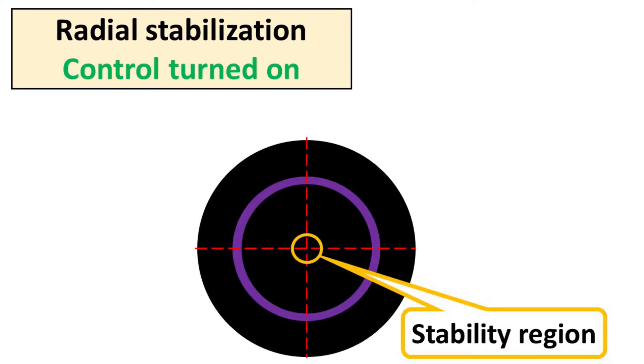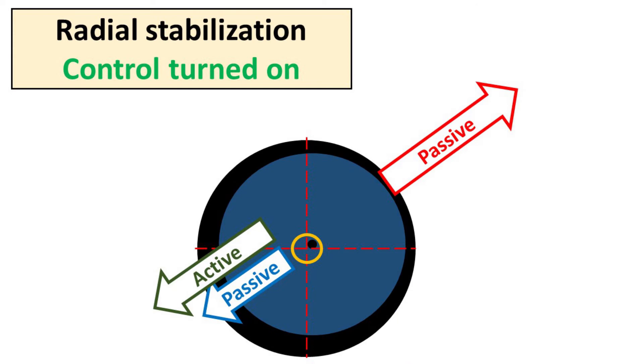So, to make this system stable, we need to turn on the active control. When we do this, instead of a single balance point, we have a stability region over the stage. Inside this region, the system can find a place where all forces nullify each other.